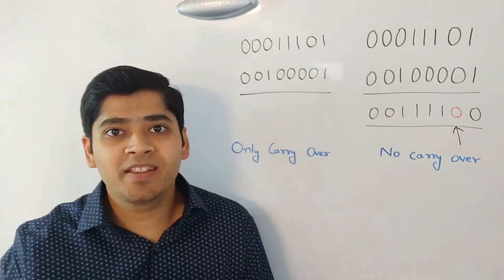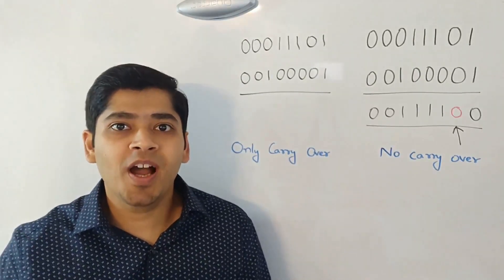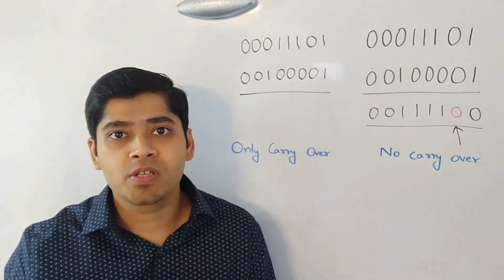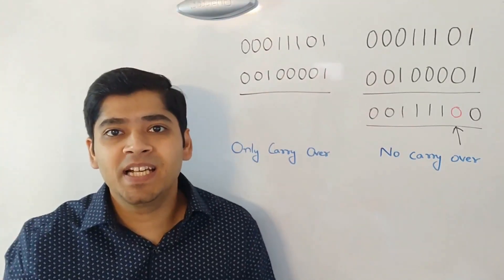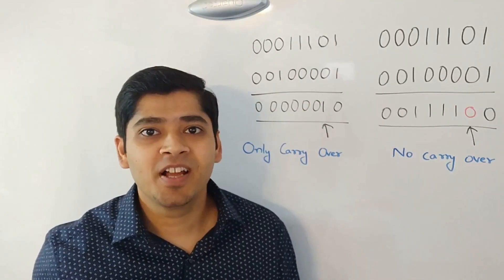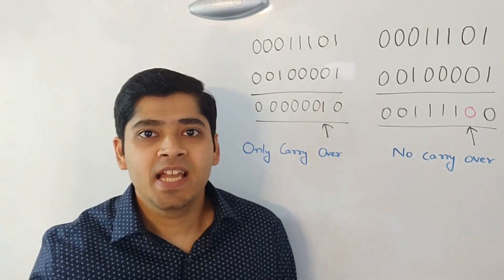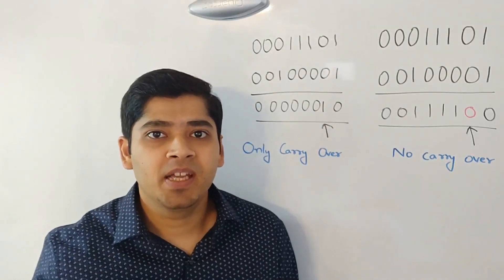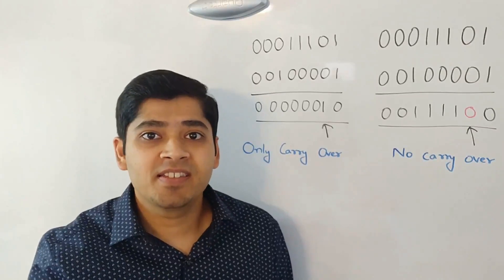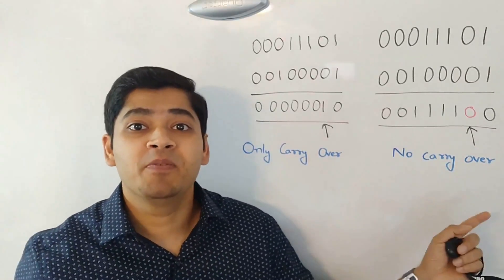Now, let's look at the same two numbers and you have to take into account only carry overs. What will be the result in such a scenario? With only carry over, our result will look something like this. As you can see, there is only one single bit in this result and this is actually just the same bit which was taken away from the previous component.